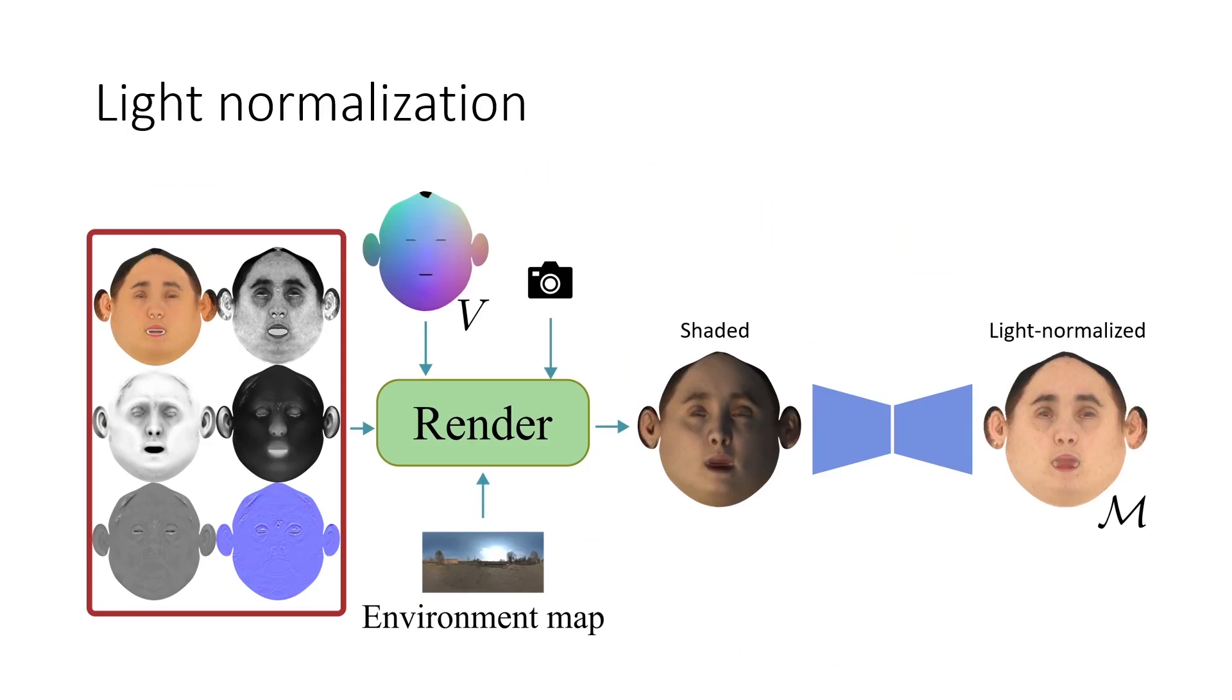If this step is omitted, unexplained light contributions, such as strong directional lights, end up baked in the final estimated reflectance maps. For this step, we create a dataset by rendering subjects with random environment maps. We then train an image-to-image translation network to recover the texture with normalized light M.